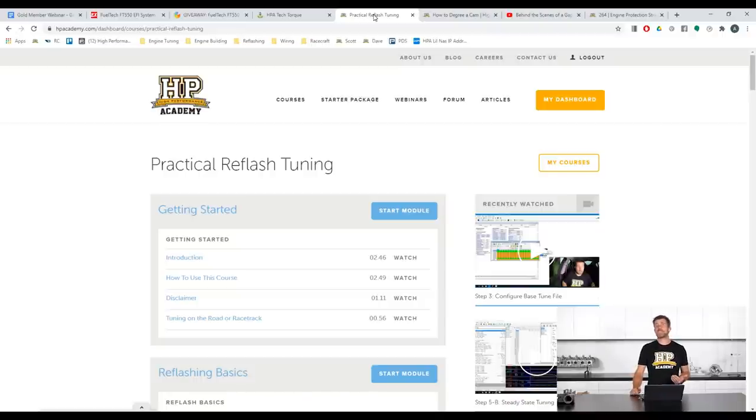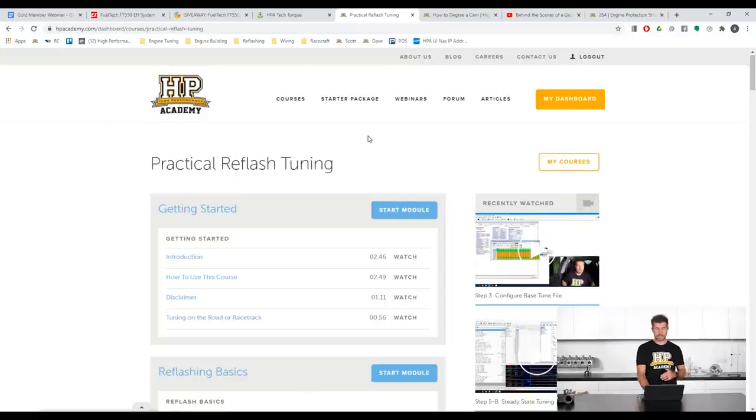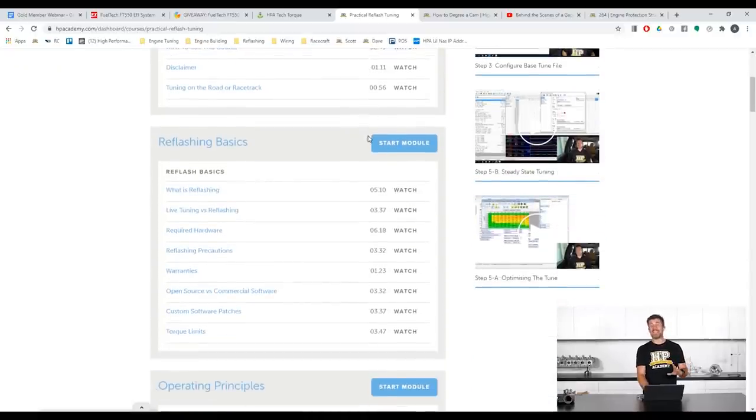Our practical reflash tuning course is one of our courses that teaches you how to tune factory engine management systems using the process of reflashing. This is a process that's becoming increasingly popular on late model cars where it has become difficult to remove that factory ECU and fit an aftermarket standalone. The reason for this is the whole car basically relies on messaging between the different electronic modules. You remove the factory ECU out of the car. You may be able to get the engine running but probably the transmission won't change gear, your gauge cluster won't work, the air conditioning may not work and a range of other problems. So reflashing allows us to read the information out of that factory ECU, modify it and then flash it back in.